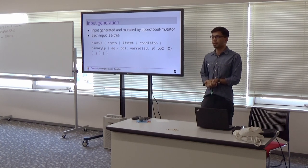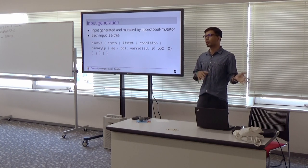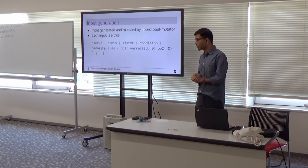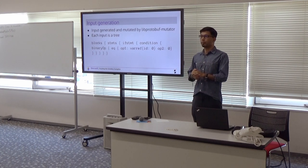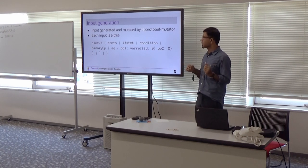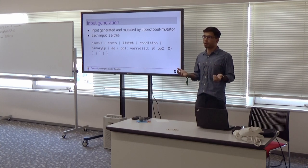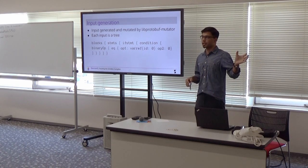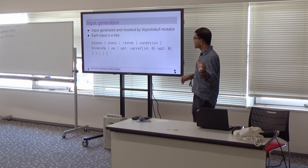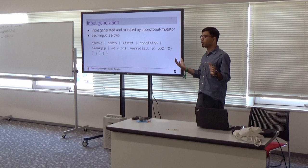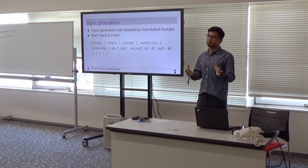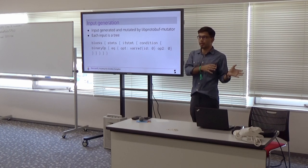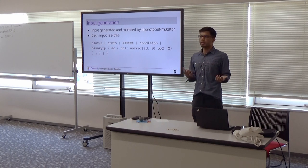So the next thing is input generation. We have the spec. How do we convert the spec into a valid input? We don't generate the input ourselves. Fortunately, there is a library called libprotobufmutator, which is also developed at Google, which takes the specification shown in the previous slide and converts it into a valid input.